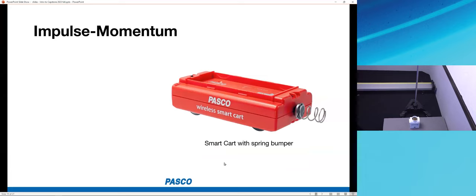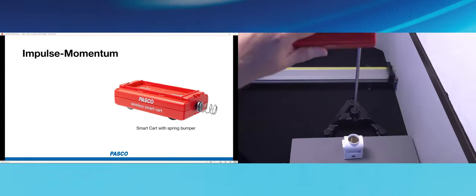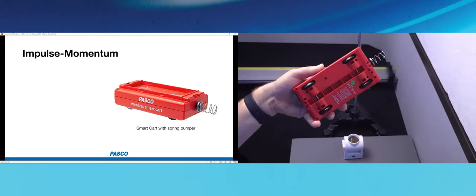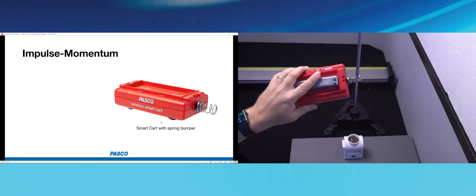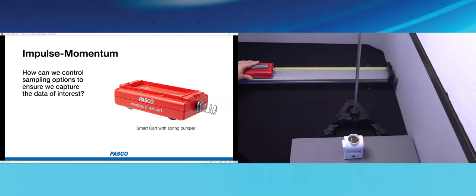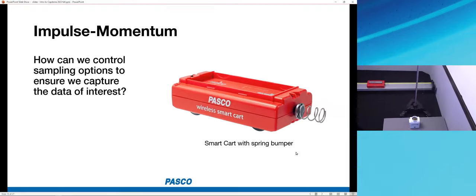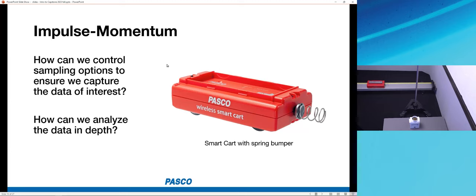For the second activity, we'll use our wireless smart cart — a low-friction cart with a suite of sensors built in. I'll push this cart toward the end stop, where it bounces off a spring attached to its force sensor. The question is: how can we control the sampling options in Capstone to capture the data of interest — specifically the forces applied during that very brief collision?